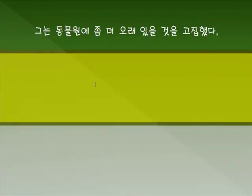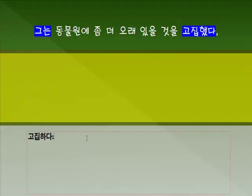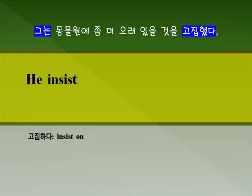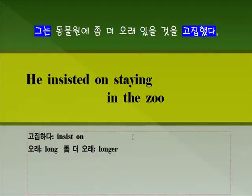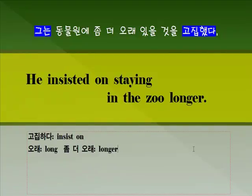세 번째 문장입니다: '그는 동물원에 좀 더 오래 있을 것을 고집했다.' 고집하다 — 'insist on'이라는 표현이 있습니다. 과거이므로 'insisted on'. 머물다는 'stay', 동물원에는 'in the zoo', 좀 더 오래는 'long'의 비교급 'longer'. 뭐뭐 할 것을 고집하다, 'insist on' — 상당히 많이 나오는 표현이니까 주의하시기 바랍니다.